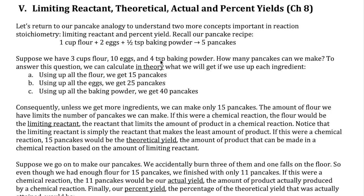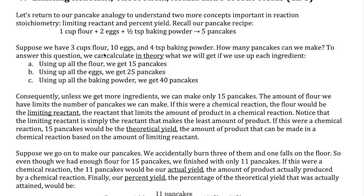To illustrate the idea, I'm bringing back the example I used in a previous video of making pancakes. The abbreviated recipe is one cup of flour mixed with two eggs and half a teaspoon of baking powder to make five pancakes. Now let's consider a real-life situation where you decide to make pancakes. Most likely you'll check what you have in your pantry. In this case you have three cups of flour, 10 eggs, and four teaspoons of baking powder. In this case we don't have the correct ratio of all three ingredients — we have too little of some and too much of others — meaning if we use up one ingredient we can't make any more pancakes.